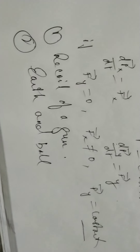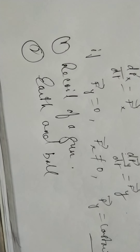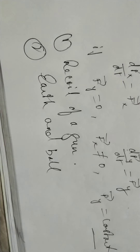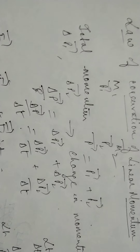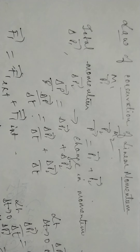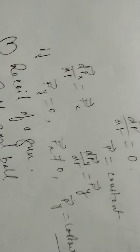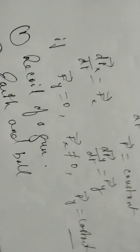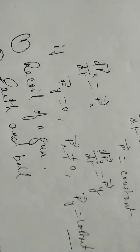Other examples include jumping from a boat to the shore, the flight of a rocket, and the explosion of a bomb — all of these use the law of conservation of linear momentum. To summarize, if there is no external force acting on the system, the total momentum of the system remains conserved.